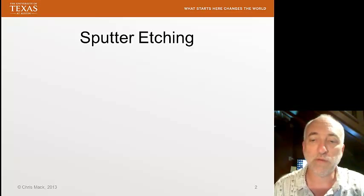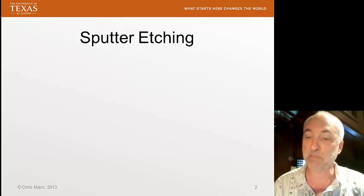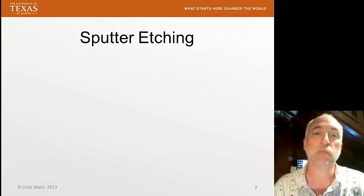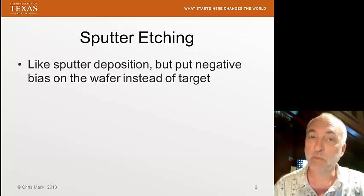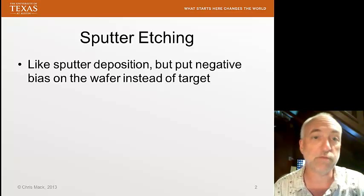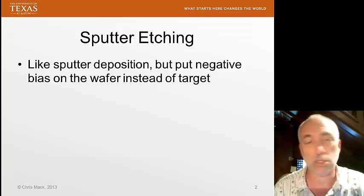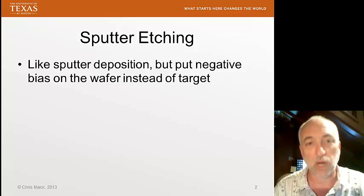One of the ways in which we got high anisotropy is something called sputter etching. You might recall from our previous lectures on physical vapor deposition that there was something called sputter deposition — very popular, very commonly used to deposit materials in the semiconductor industry.